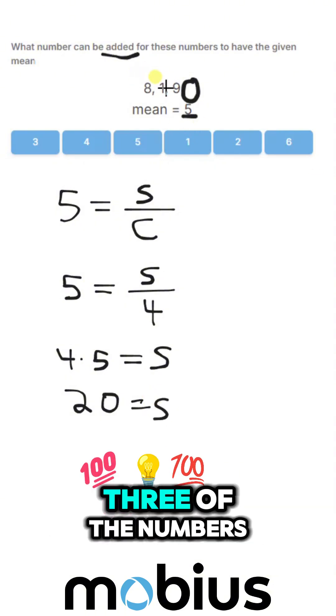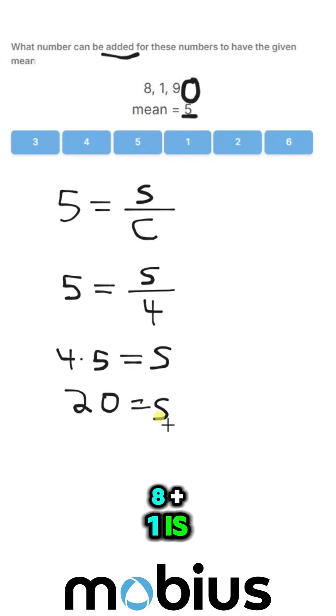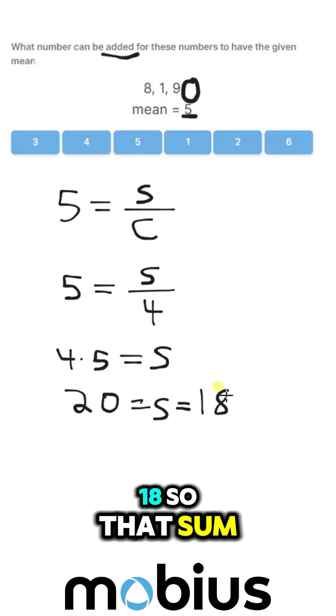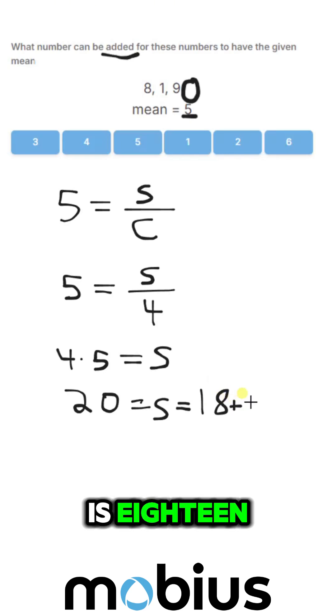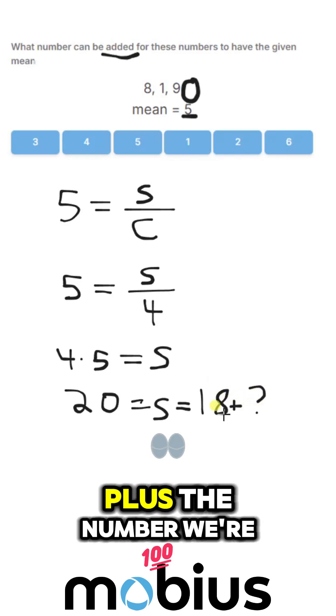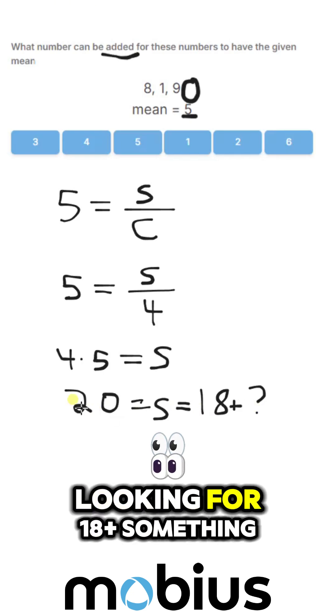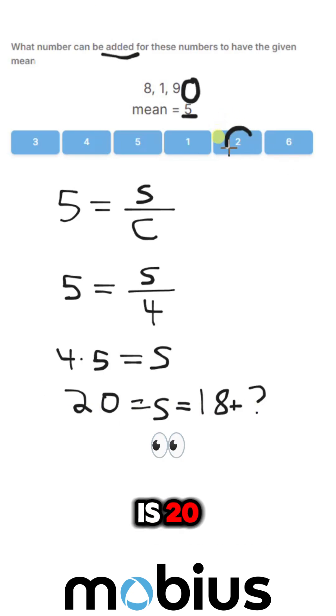And we already know 3 of the numbers. 8 plus 1 is 9, plus 9 is 18. So that sum is 18 plus the number we're looking for. 18 plus something is 20. That something is going to be 2.